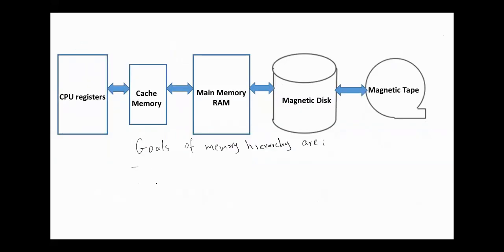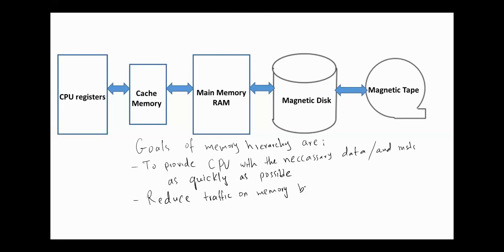The main goals of memory hierarchy are first to provide CPU with the necessary data and instructions as quickly as possible, and the second goal is to reduce traffic on memory bus.